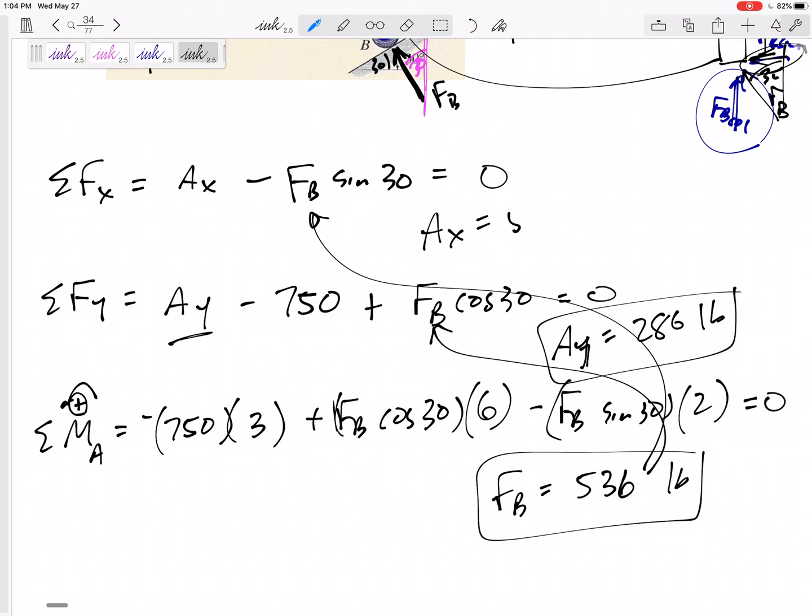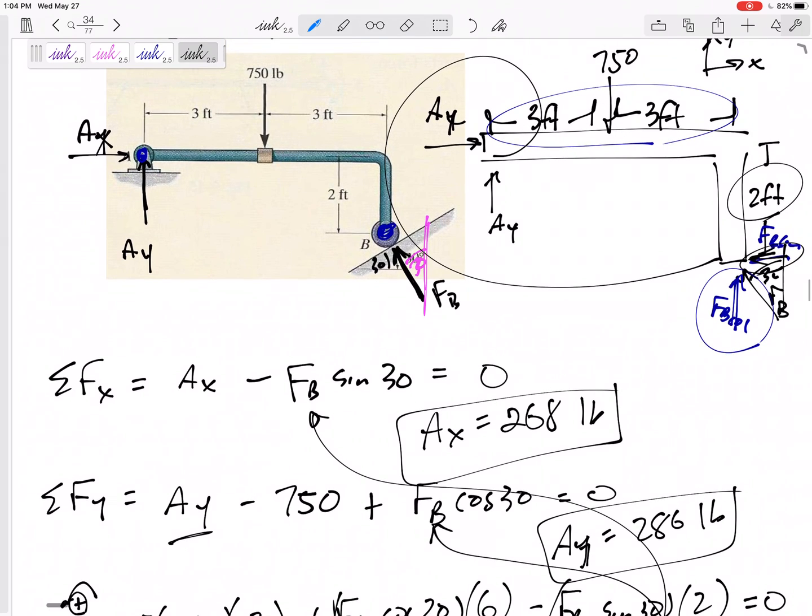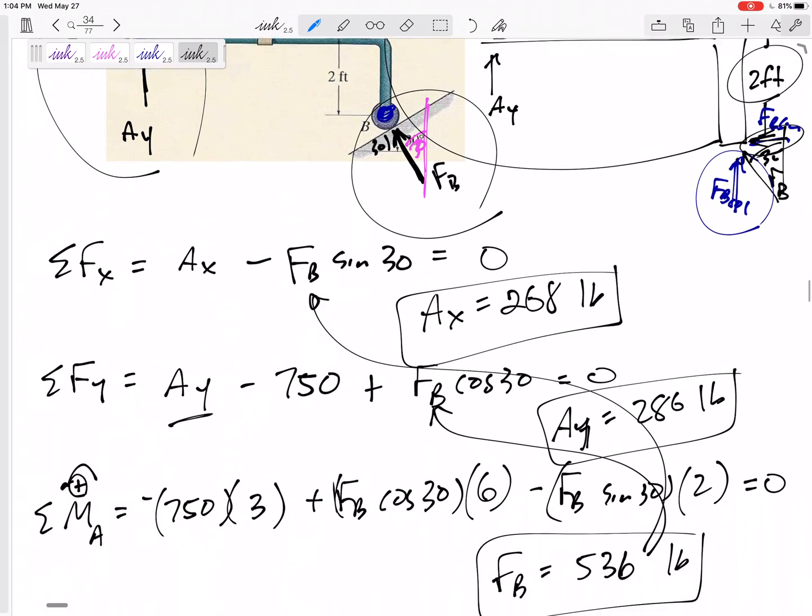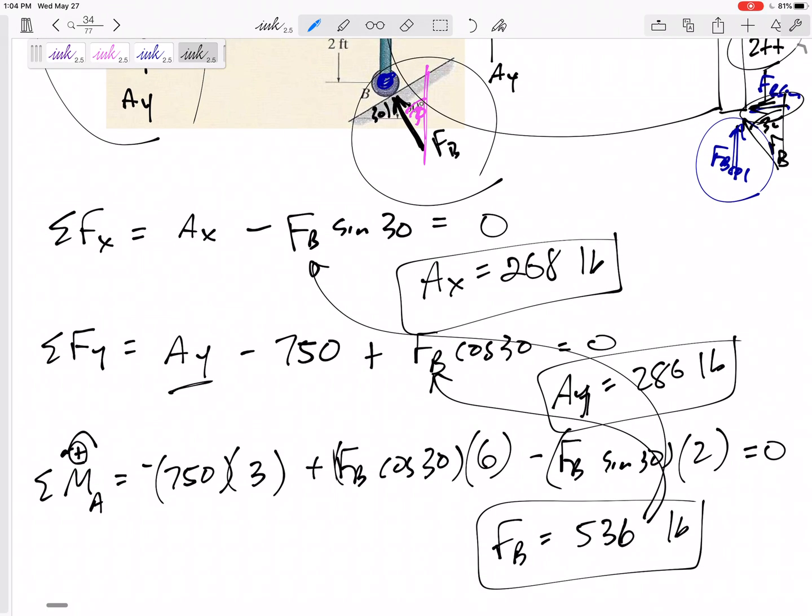All right, so step back and look at what we did. We drew a free body diagram knowing that was a pin, so it needs an Ax and an Ay. Knowing this is a roller, so it just needs a force Fb that is perpendicular to the incline. And then sum of the forces in x, sum of the forces in y, sum of the moments - three equations and we had three unknowns that we solved for.